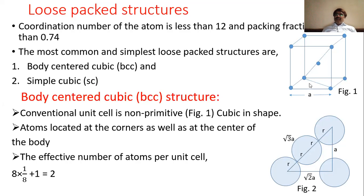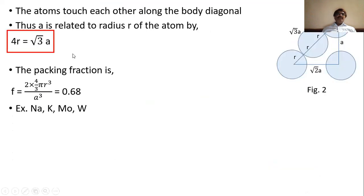Along the body diagonal the atoms touch each other. The length of the body diagonal is √3·a, which equals 4 radii: the atom at the center contributes 2r, and the corner atoms each contribute r, giving √3·a = 4r. This is the key equation used to solve for the packing fraction.